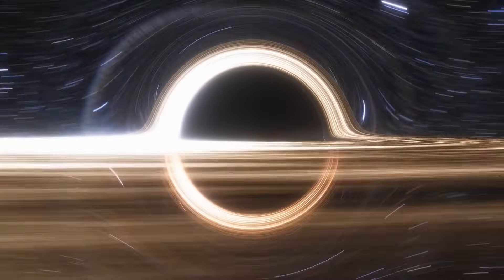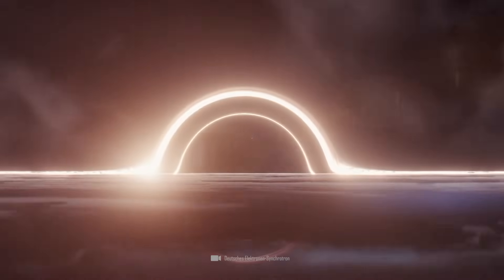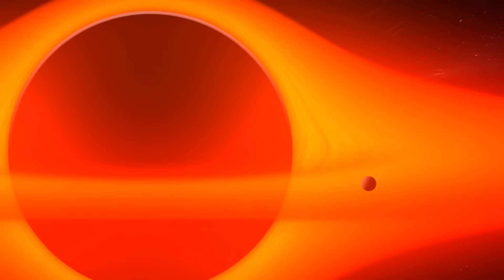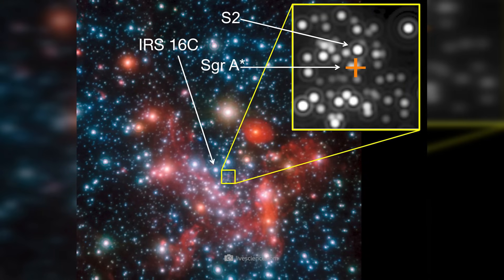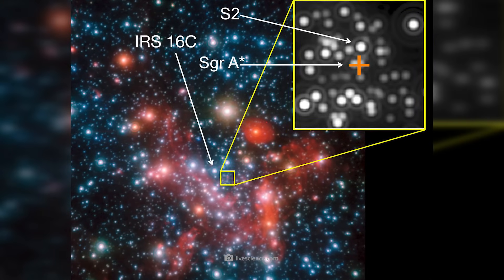However, we can consider this comparatively quiet mass monster our own. Since it currently accretes very little matter, there are only occasional bursts of x-rays. In fact, we still find stars in the immediate vicinity of the black hole, such as S2, which, on its extreme orbit, offers us unique insights into the curvature of space-time.